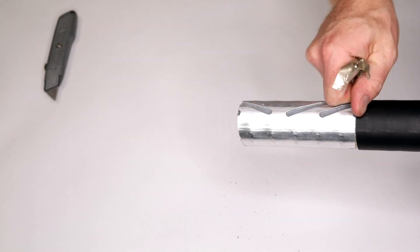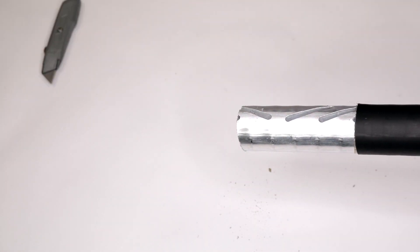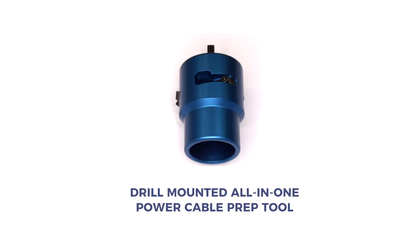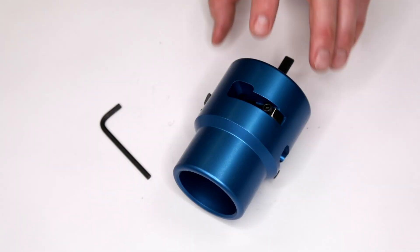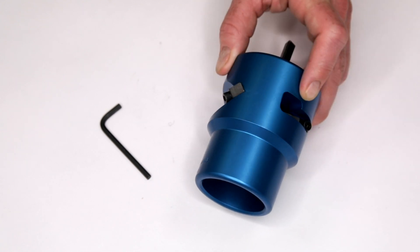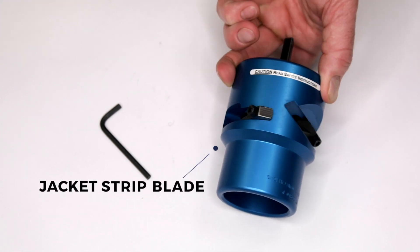Once the bare outer conductor has been exposed, use the drill-mounted all-in-one power cable prep tool. Before mounting the cable prep tool on the drill, remove the jacket strip blade from the cable prep tool with the hex key provided. This will be the first blade that would come in contact with the cable and is located closest to the tool opening where the cable is to be inserted.